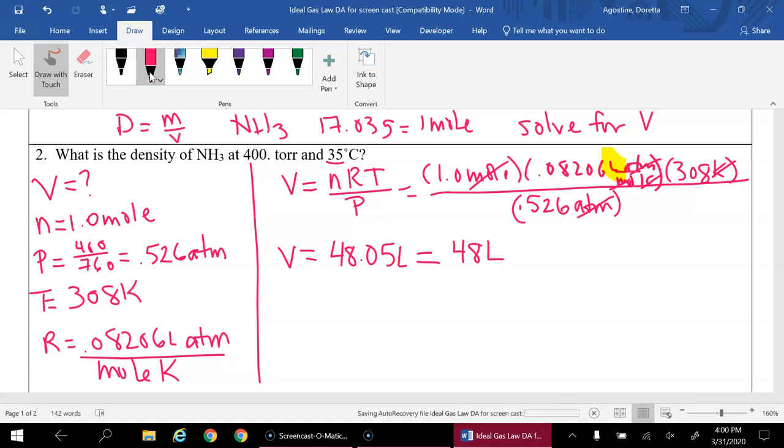Now, we assumed one mole. And we remember that one mole for ammonia is 17.03 grams. So now we can solve for density. We know that 17.03 grams of ammonia has a volume of 48 liters.